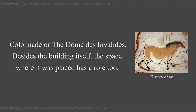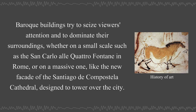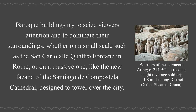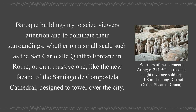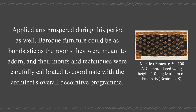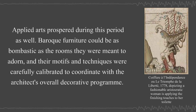Besides the building itself, the space where it was placed has a role too. Baroque buildings try to seize viewers' attention and to dominate their surroundings, whether on a small scale such as San Carlo alle Quattro Fontane in Rome, or on a massive one like the new facade of the Santiago de Compostela Cathedral, designed to tower over the city. Applied arts prospered during this period as well. Baroque furniture could be as bombastic as the rooms they were meant to adorn, and their motifs and techniques were carefully calibrated to coordinate with the architect's overall decorative program.